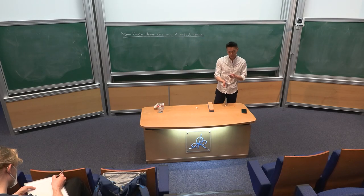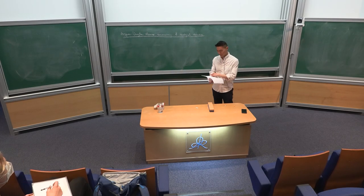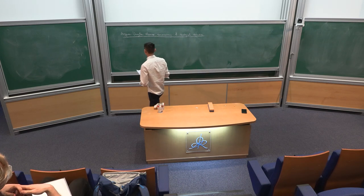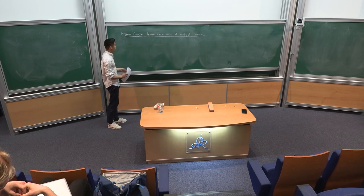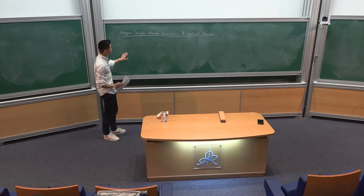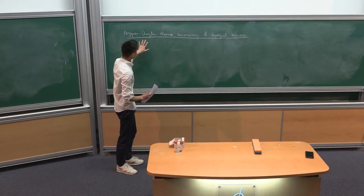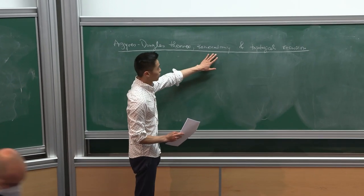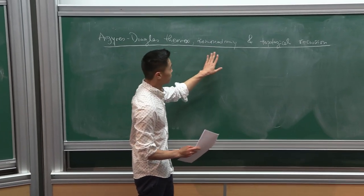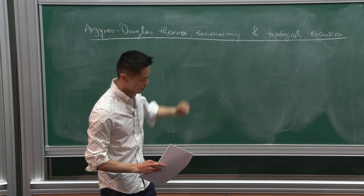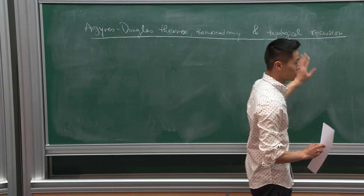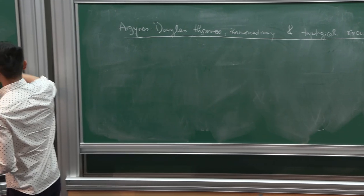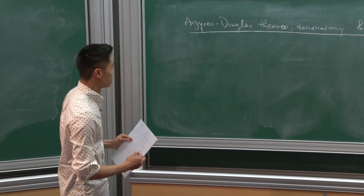Thank you very much for the introduction and the opportunity to speak here. The title of my talk covers three things: a physical theory called GS Douglas theory, and two purely mathematical things — isomonodromy deformation and topological recursion. Our attempt is to explain how little I understand about these things and how they are related.